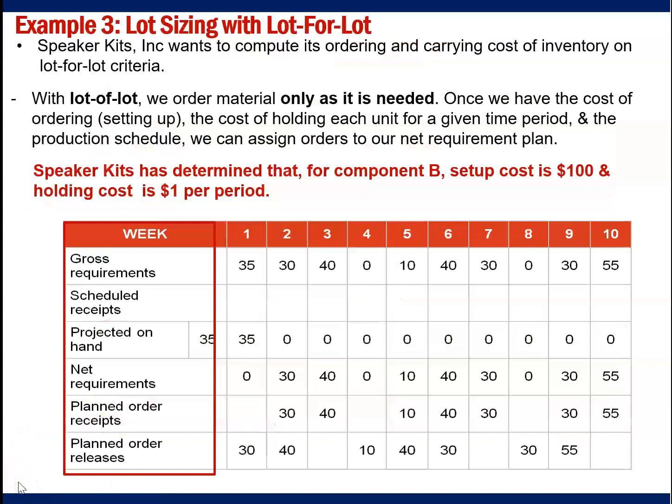Let's take a look at example three: lot sizing with lot for lot. Kids Incorporation wants to compute its ordering and carrying cost of inventory on a lot for lot criteria. With lot for lot, we order material only as it is needed. Once we have the cost of ordering or setting up, the cost of holding each unit for a given time period, and the production schedule, we can assign orders to our net requirement plan.